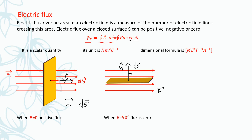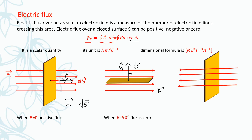Now if the electric field lines and area vector are in opposite directions — the electric field is along one direction and the area vector is along the opposite direction — then theta is 180 degrees, so electric flux is negative. Zero electric flux means the electric lines of force are not passing through the area; they are parallel to it, so no electric lines pass through the area and therefore electric flux is zero.